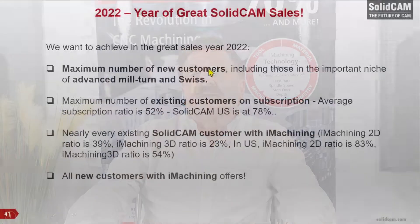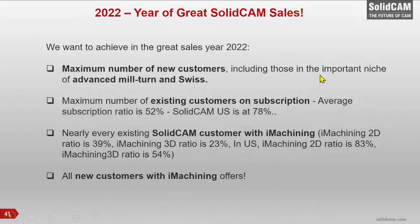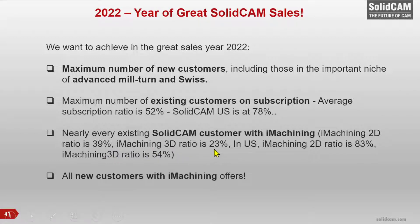What should be your targets in 2022? Maximum number of new customers, including those in the important niche of Advanced Mill-Turn and Swiss. Maximum number of existing customers on subscription — our worldwide average subscription rate is 52%, while SolidCAM US has 78%, so there is room to grow. We want nearly every existing SolidCAM customer to have iMachining. Today, iMachining 2D ratio is 38% and iMachining 3D is 23% worldwide. In the US, iMachining 2D ratio is 83% and iMachining 3D is 54% — more than double the worldwide average. We want all new customers to get an offer with iMachining.